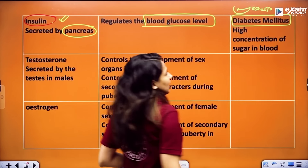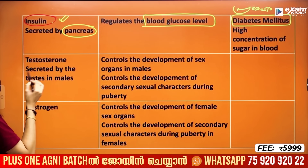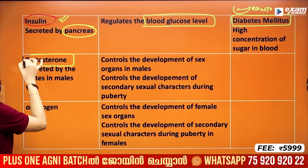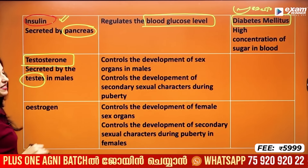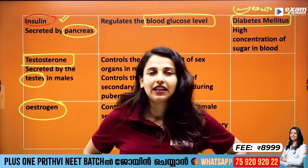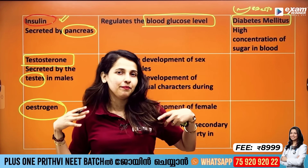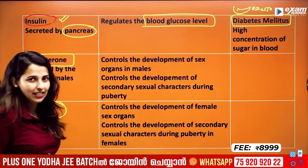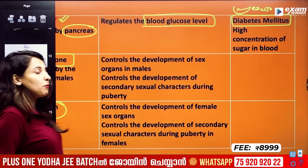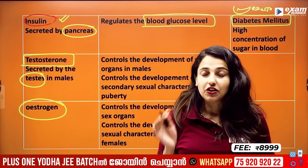Then comes testosterone, secreted by the testes in males. Testosterone controls secondary sexual characters such as growth of sex organs, voice change, and facial hair. Females have estrogen, which controls body changes like breast development, pelvic area changes, and armpit hair. The hypothalamus secretes releasing hormones that act on the pituitary gland. That is why we call them animal hormones.